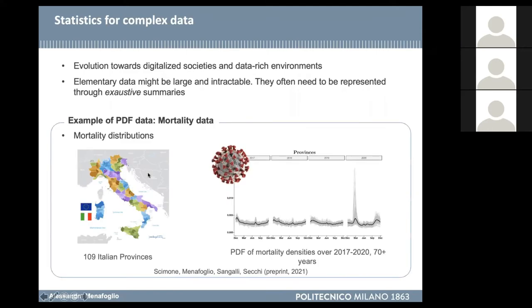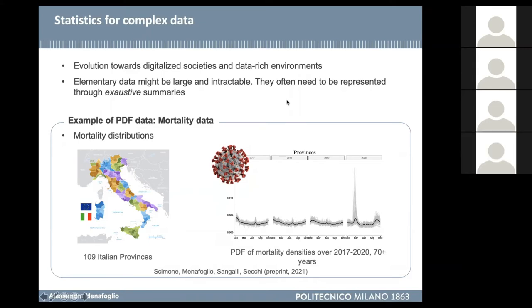And here it comes the presence of PDF data — data that are represented as distributions. I will work on an example very close to our daily life, unfortunately, in the last year. We talk about an example on density of mortality that was clearly perturbed in 2020 with respect to previous years. Even if the data we have at our disposal are just counts of deaths, we need to summarize this data to provide compact information and study the dynamic of the phenomenon.